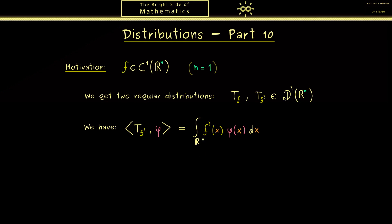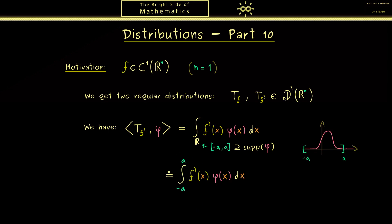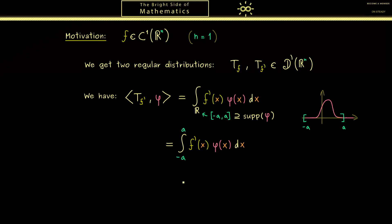The first thing we can do is shrink the domain of integration to the support of φ. By definition of a test function, outside of a compact set it is zero. So we can choose any interval [−a, a] as long as the support of φ lies inside it. We can visualize this: the graph of φ is zero at −a and at a, so we rewrite our integral from −a to a.